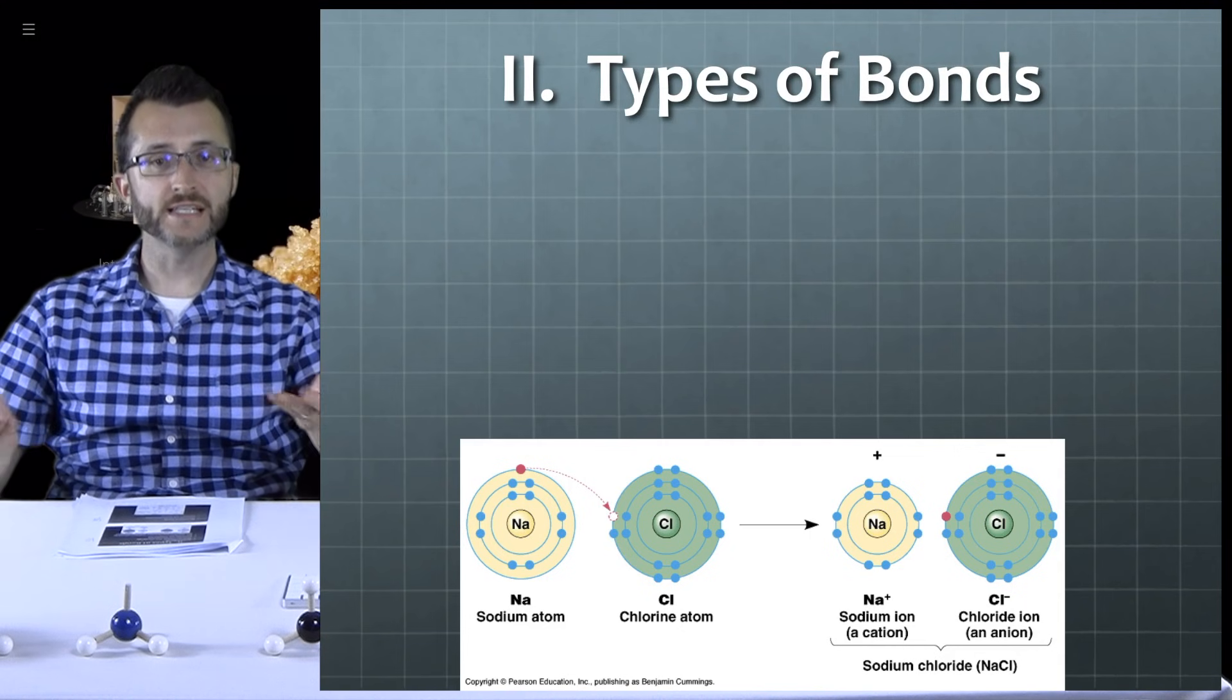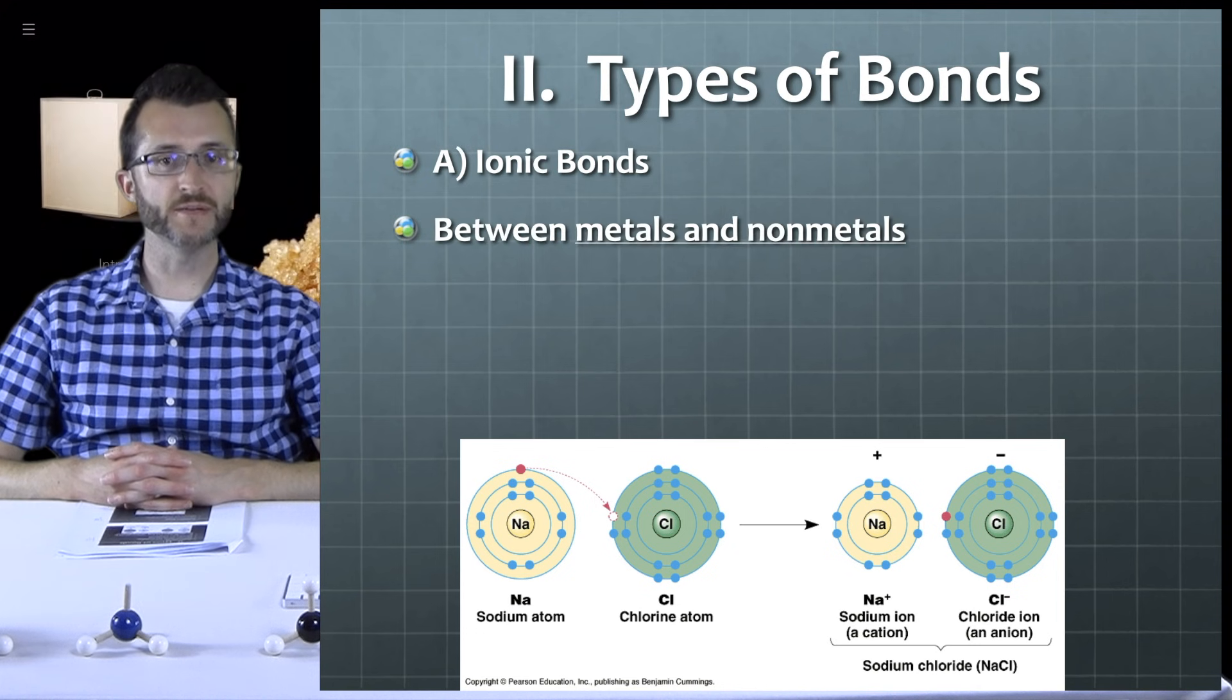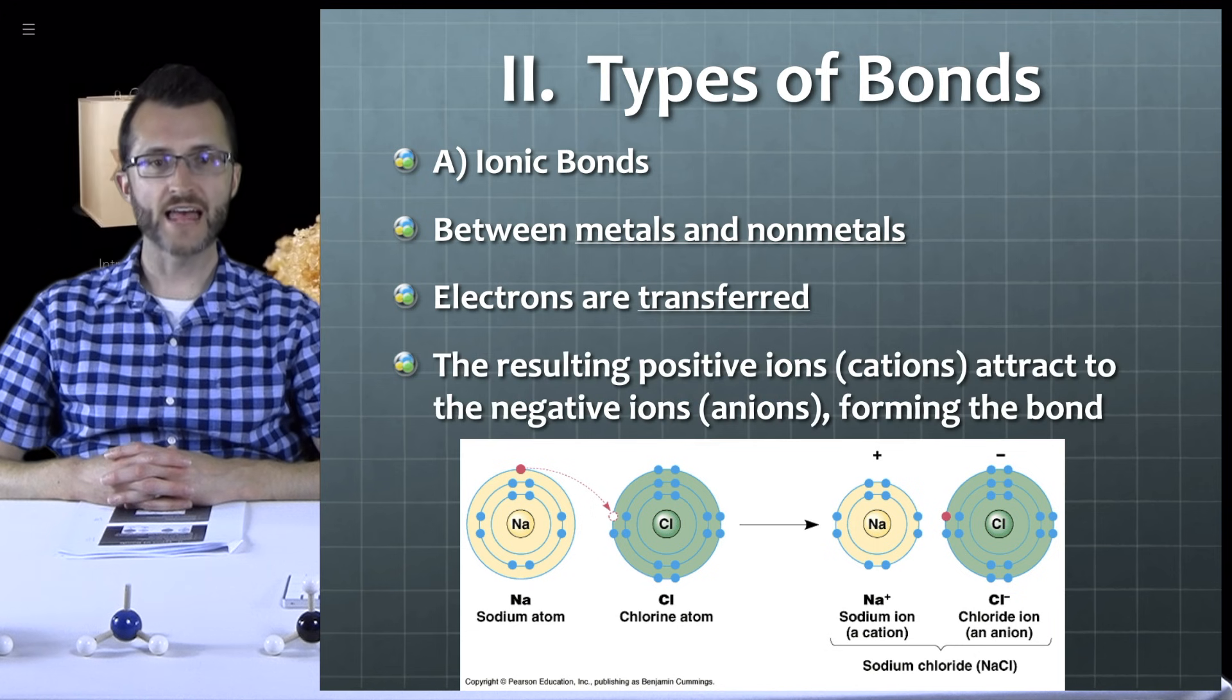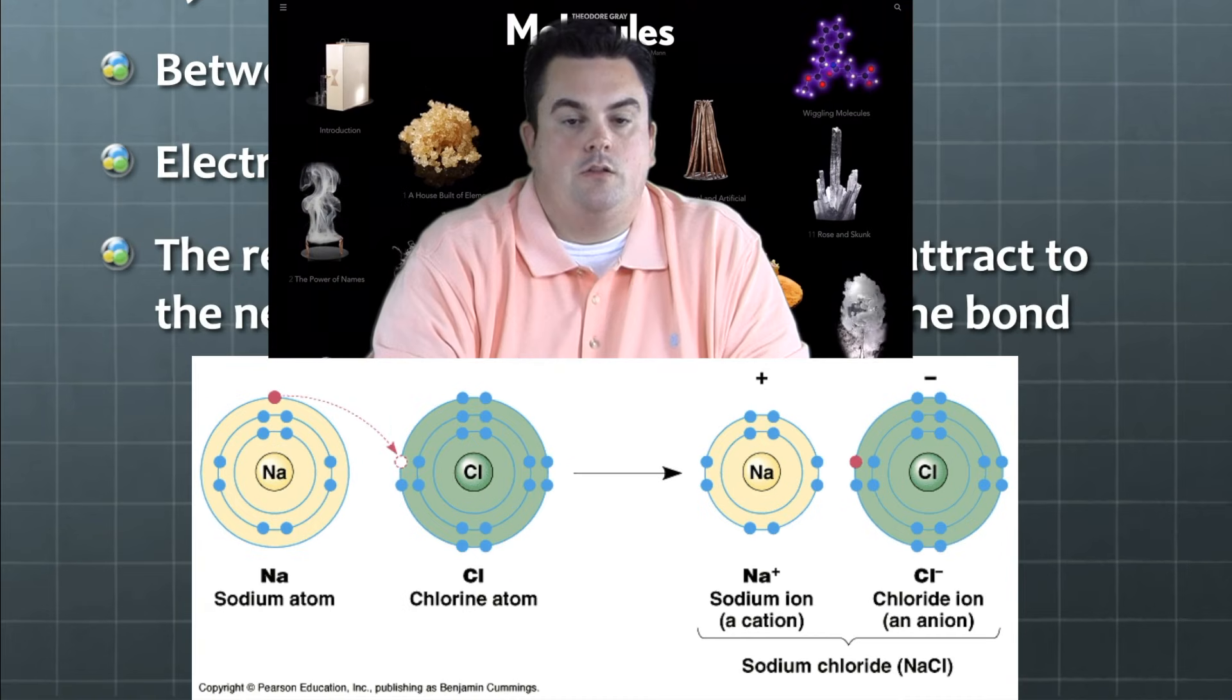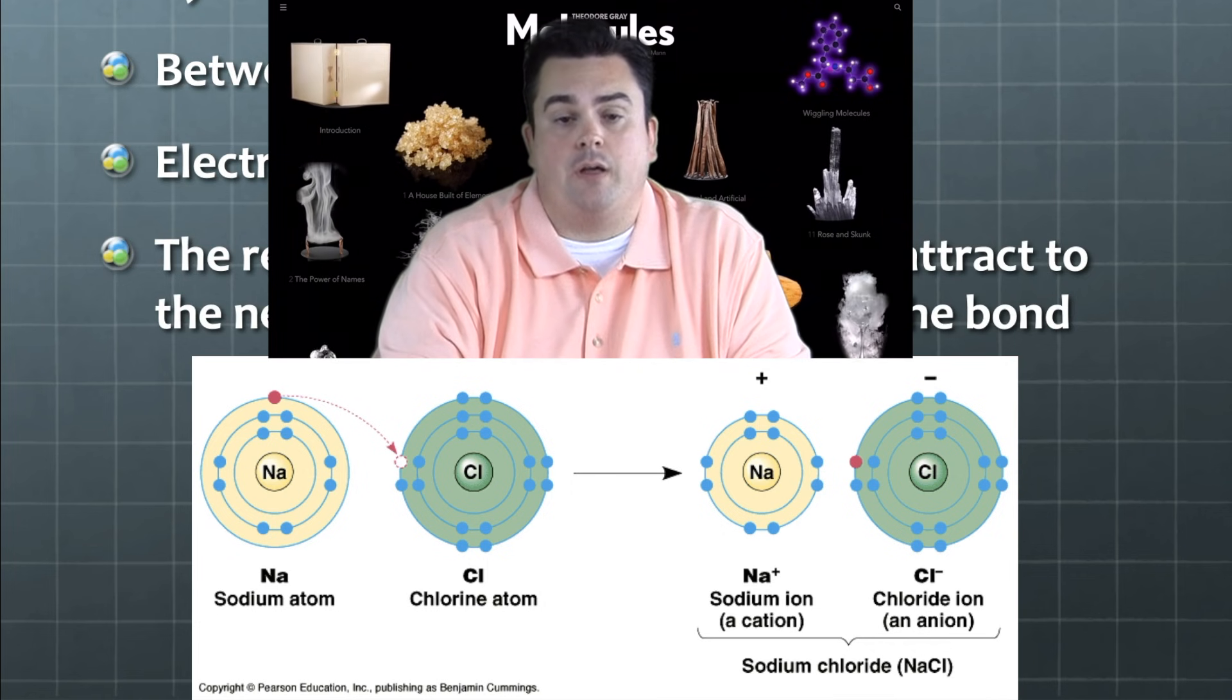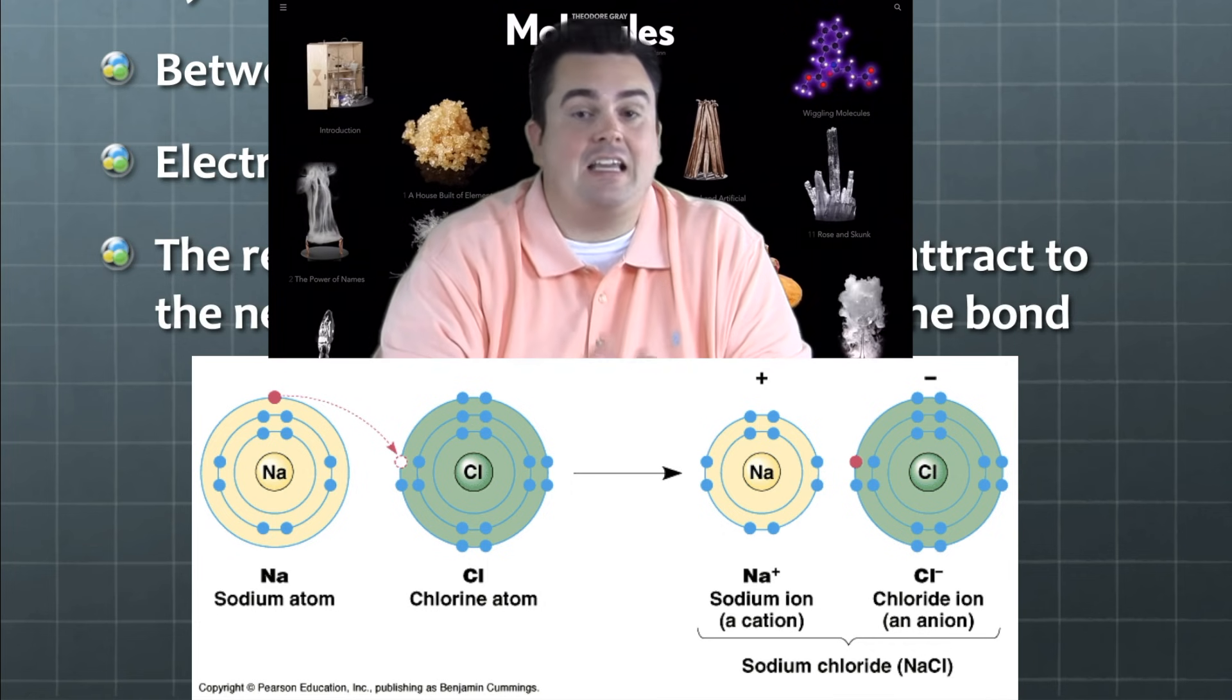Let's talk about the three types of bonds. Let's begin with ionic bonds. They are between metals and nonmetals. Electrons are transferred. And the resulting positive ions, called cations, attract to the negative ions, called anions, forming the bond. So let's say we have sodium, a metal, and chlorine, a nonmetal. So metals tend to lose electrons, and nonmetals tend to gain them.